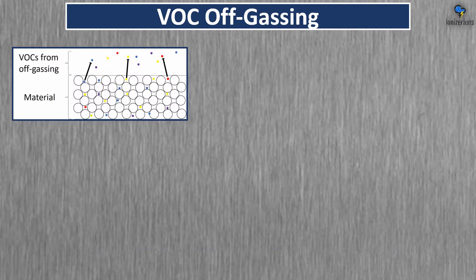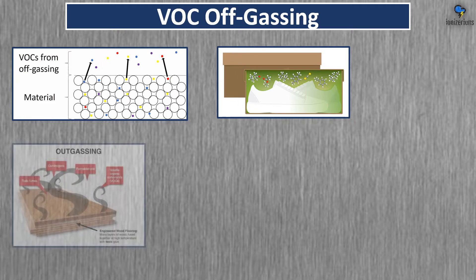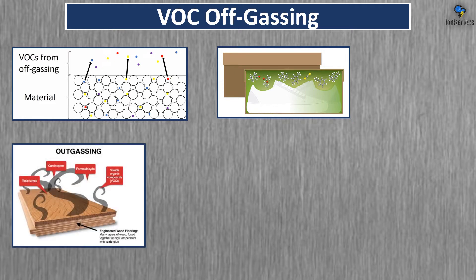VOC off-gassing. In the first image you can see, conceptually, what VOC off-gassing is — the gas molecules escape from materials. When you purchase new shoes, that new shoe smell — those are volatile organic compounds. When you're purchasing new flooring, that new smell — those are volatile organic compounds. It's not always toxic, even though this image suggests so.